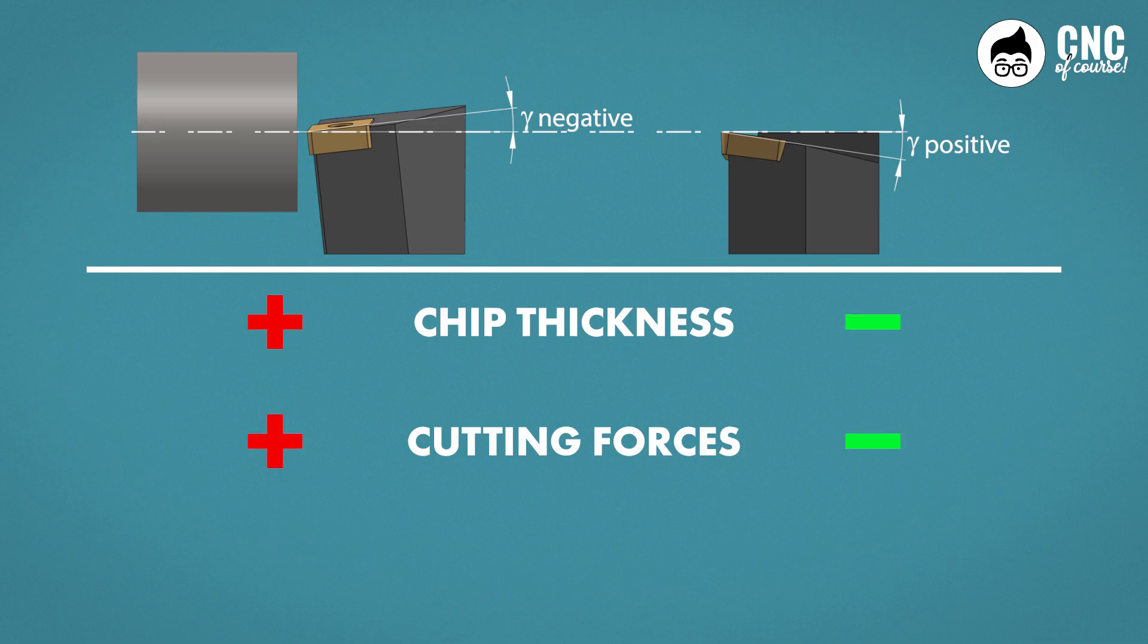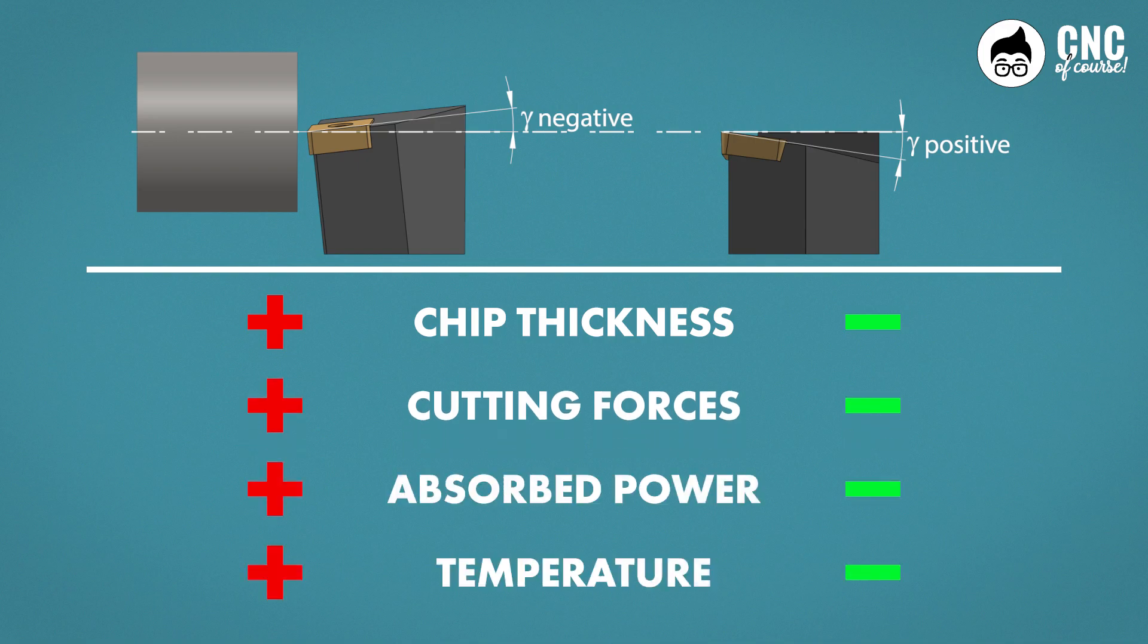with consequent differences in the cutting forces generated. Positive tool? Less chip thickness for the same volume of chip removed per minute, less force, and consequently, we can add less cutting power. And from all of this, we can already identify some practical applications.